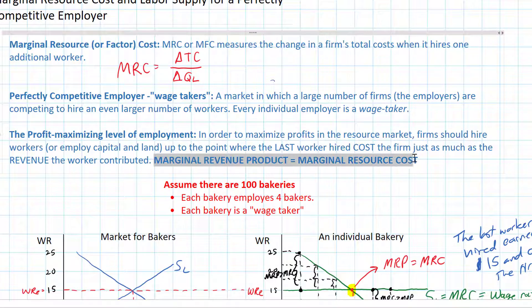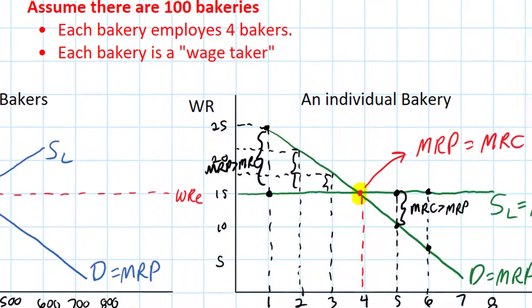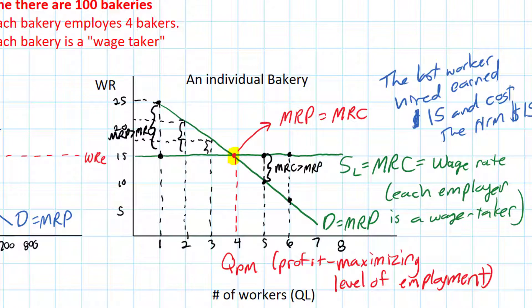That, ladies and gentlemen, is what we call the profit maximizing level of employment, or the profit maximization rule of resource employment. An individual firm should hire workers up to the point where the cost of hiring the last worker equals the revenue that the last worker earned for the firm. This is simple cost-benefit analysis, going back to one of the earliest concepts you learned in economics: every decision is a cost-benefit decision.